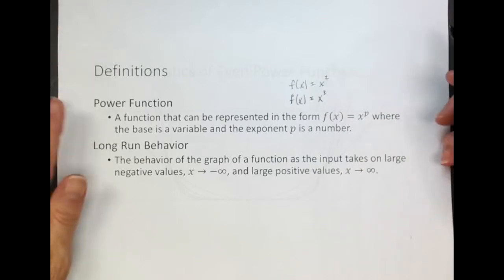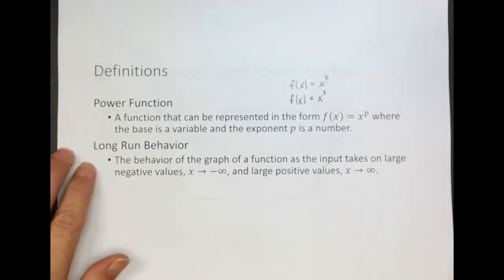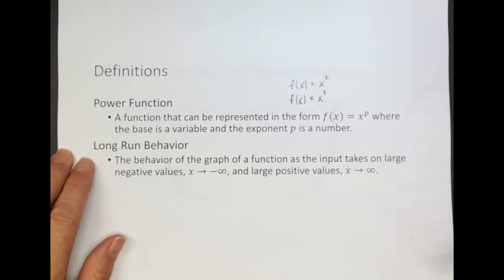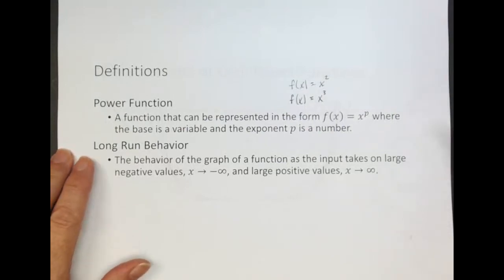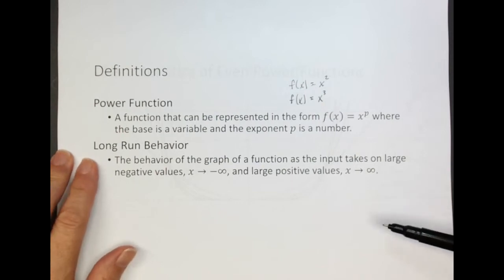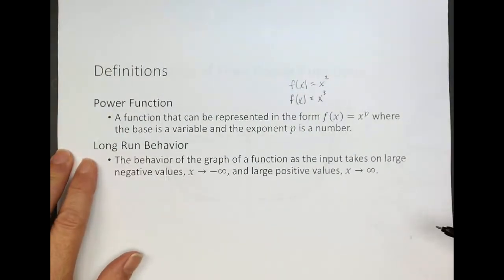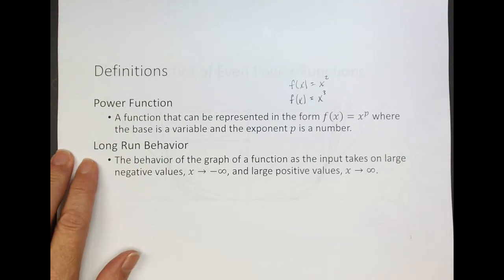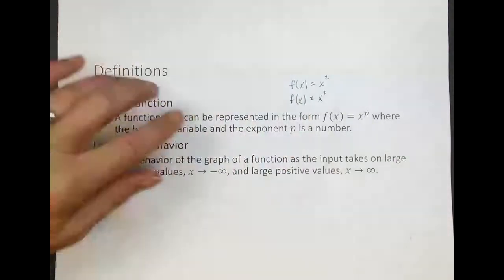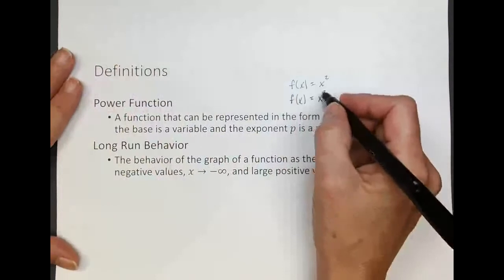A second definition we're going to establish is long run behavior of a function. The long run behavior of a function is what happens as the function approaches positive and negative infinity. For example, if we take a look at the quadratic function and graph it.